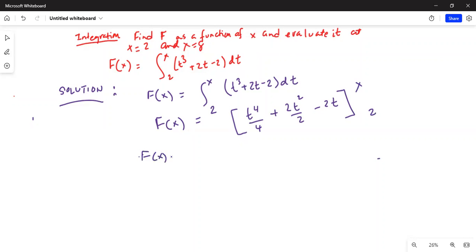F of x is equal to, if we substitute the limits, we will get x⁴ by 4 minus 2 to the power of 4 by 4, plus t squared, 2 and 2 will cancel, so x squared minus 2.